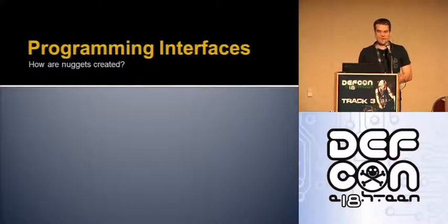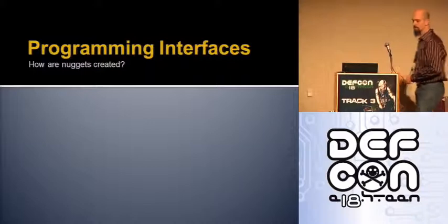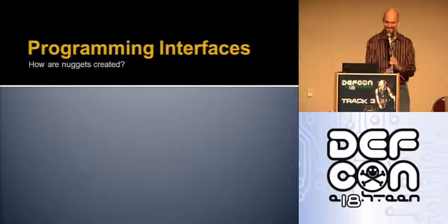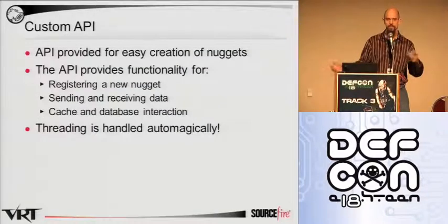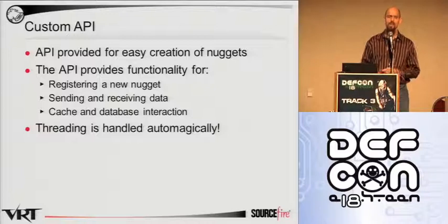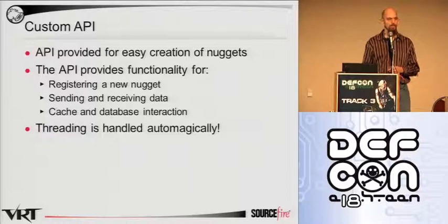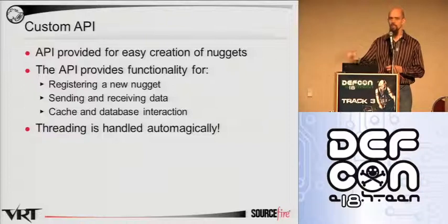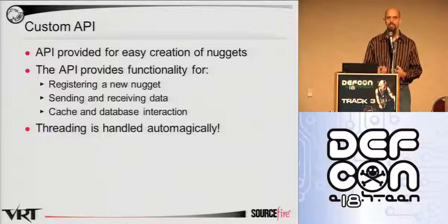We're going to talk a little bit about the API — the interface for programmers with the system. Don't worry, there's no bunch of code up here. What we've tried to do is make sure we take care of all the basic tasks that need to be done, so you can focus on just doing the things that are important: what kind of data goes in and what data do I want to generate. We take care of everything, including opening up a network socket if you're going to receive data from the dispatcher, threading, and all the interactions with the database. We want to make sure all you have to do is deal with the data you're getting and the data you're trying to create or present.